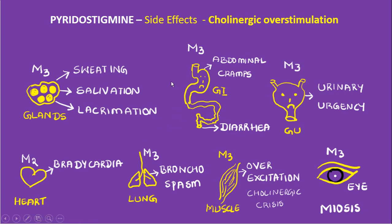To summarize the side effects diagrammatically: M3 receptor stimulation on glands causes sweating, salivation, and lacrimation; on the GI tract it causes abdominal cramping and increased peristalsis leading to diarrhea; on the bladder it increases detrusor muscle contraction causing urinary urgency; on bronchial smooth muscle it leads to bronchospasm; over-excitation of skeletal muscles can cause cholinergic crisis; and on the iris, M3 stimulation causes miosis.